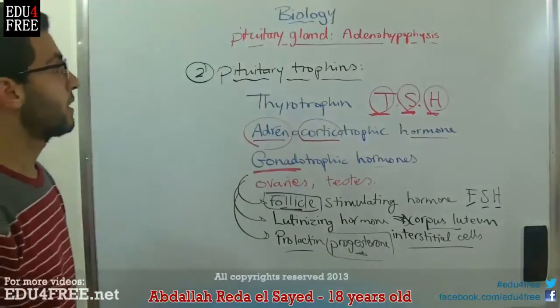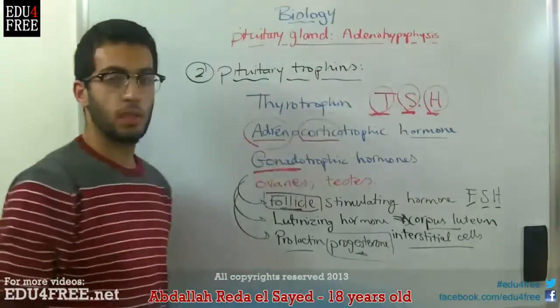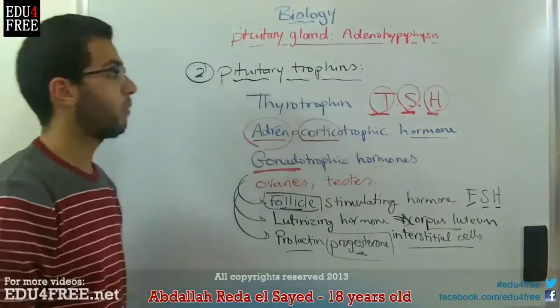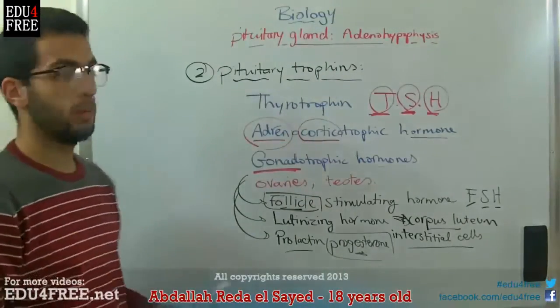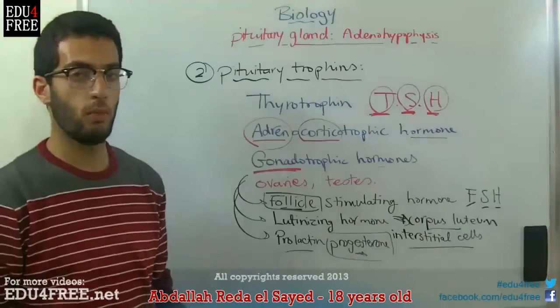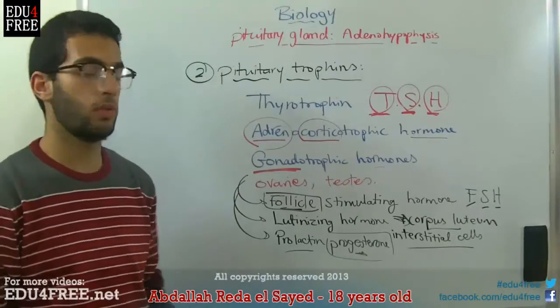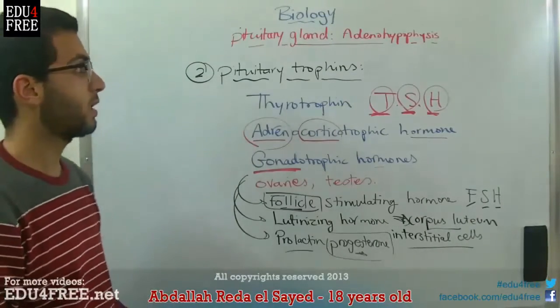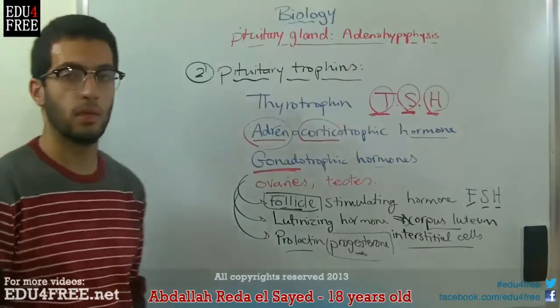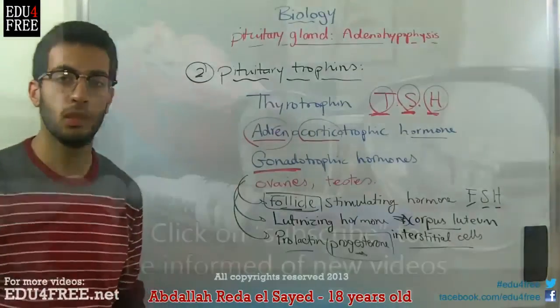That is it for the adenohypophysis. In the next lesson, we will talk about the posterior lobe of the pituitary gland, which is called the neurohypophysis. Until then, thank you for watching and see you.